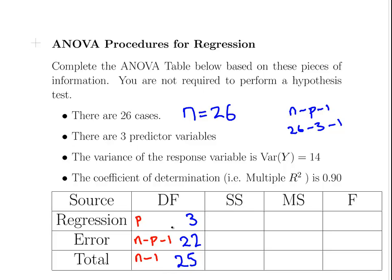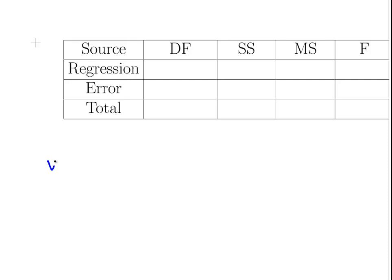Now the next thing is the variance of the response variable is 14. This is something you should always remember: variance of the response variable, particularly with regression ANOVA procedures, is the SS total over N minus 1.